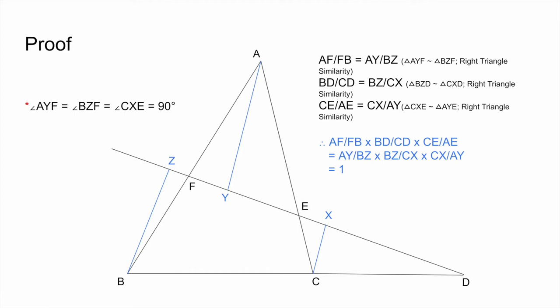And now if we substitute these values into the original equation right here, we get this original equation: AF over FB times BD over CD times CE over AE equals AY over BZ times BZ over CX times CX over AY. And these all cancel out in the end, and so it is equivalent to one.